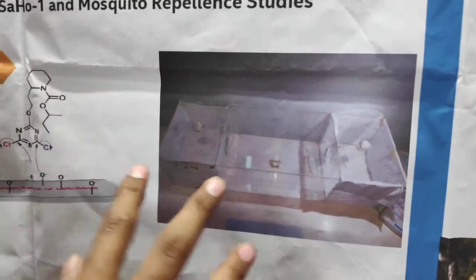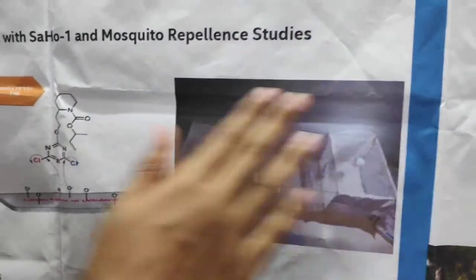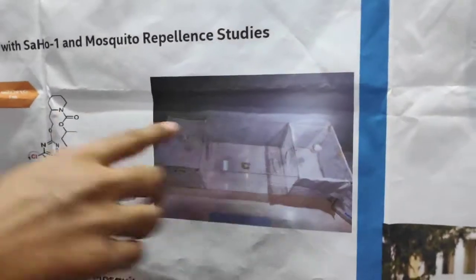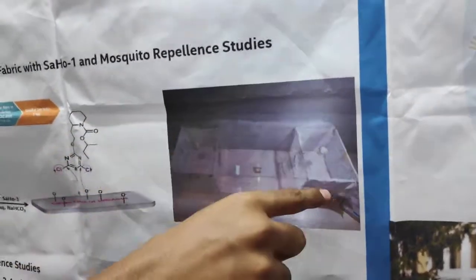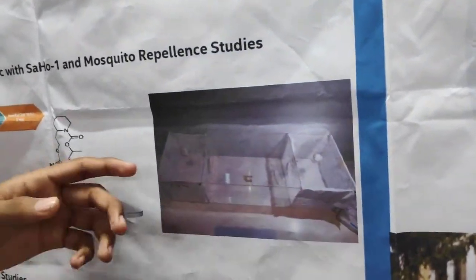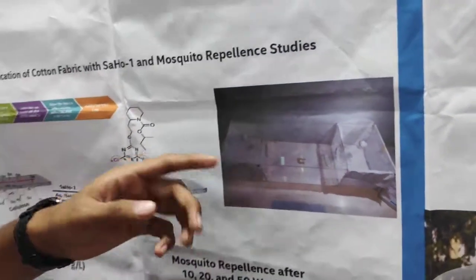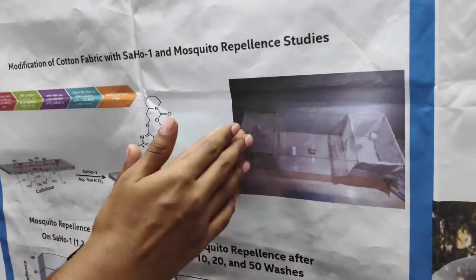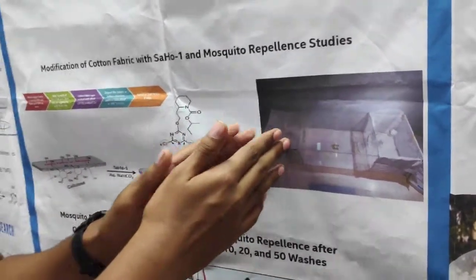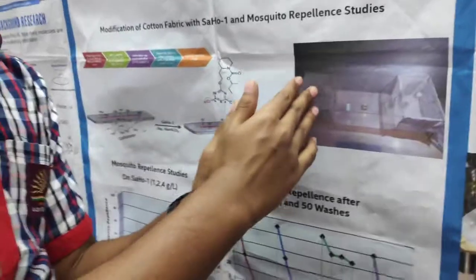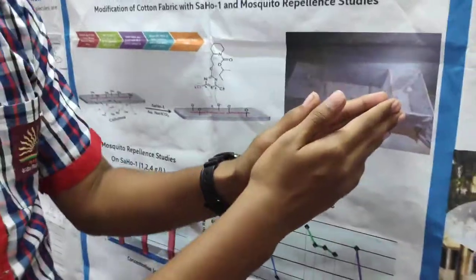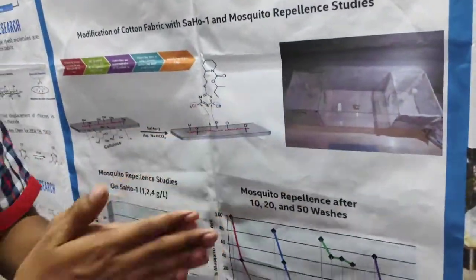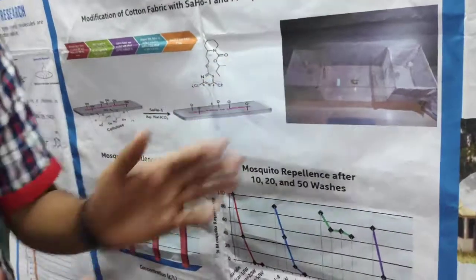As you can see, the box is divided into three compartments in the ratio 1:2:3. The mosquitoes are let in, and the migration from the side where the cloth is to the other side is how mosquito repellence is measured.